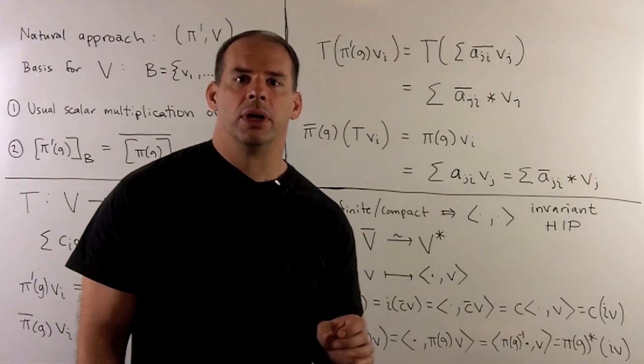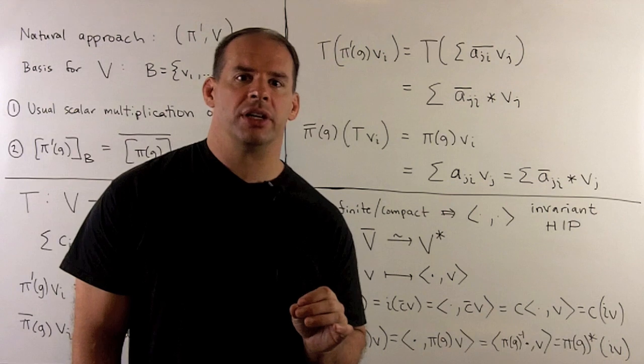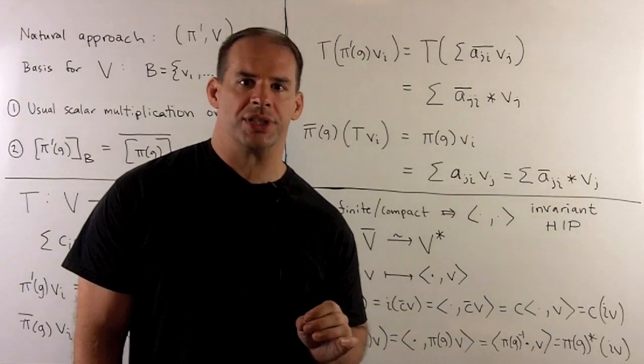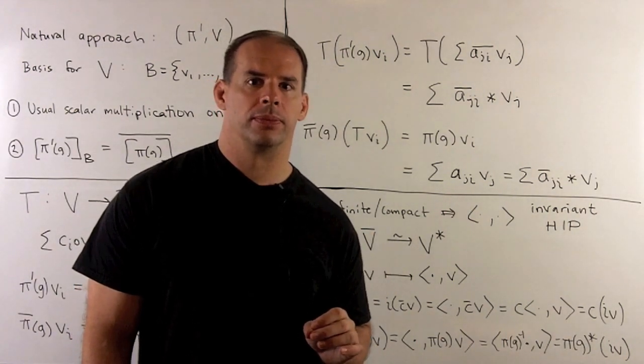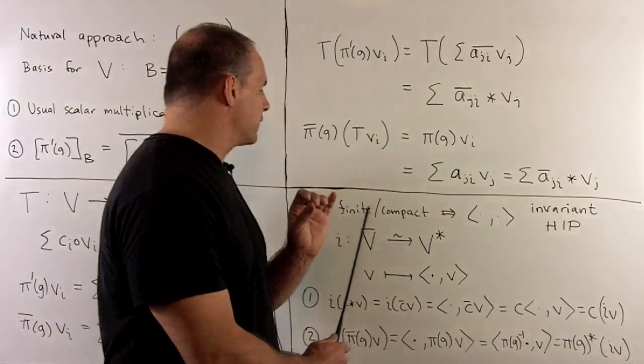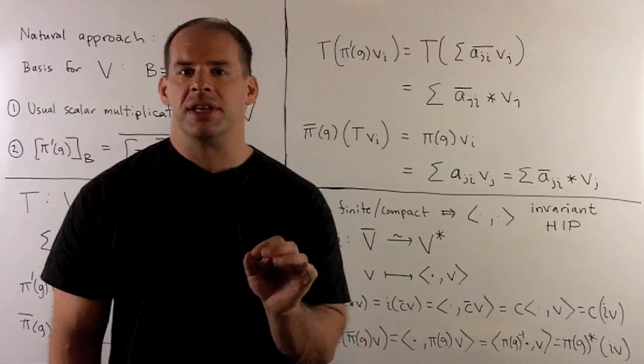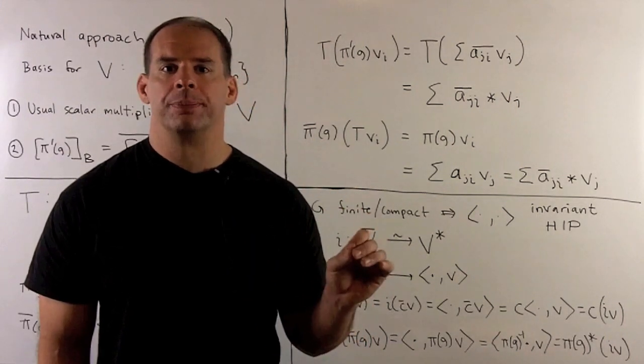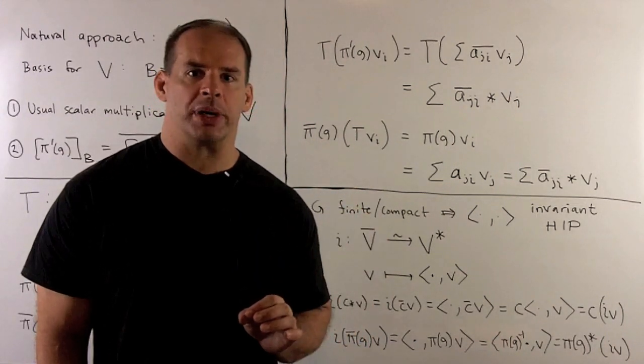As a final note, we show that the conjugate representation is equivalent to the dual representation. This follows because when G is finite or compact, there always exists an invariant Hermitian inner product on our finite dimensional vector space.